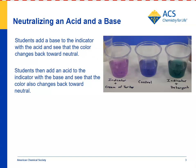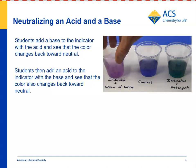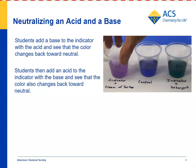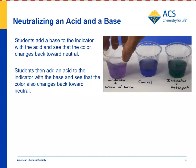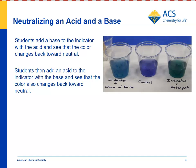Now that students have a sample with an acid and a sample with a base, they're going to see if they can neutralize those. Here we're adding some detergent to the sample that already had the cream of tartar and seeing what happens. It looks like in order to get toward neutral, we have to add a little bit more detergent. We try that, and now it looks like it's gone a little bit past neutral, but it kind of eases its way back.